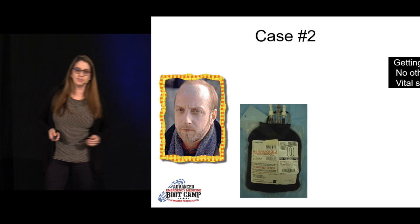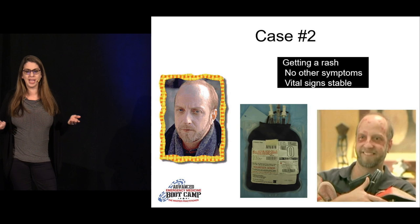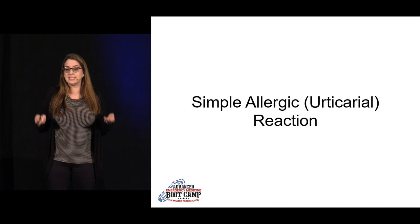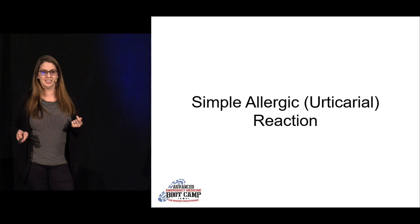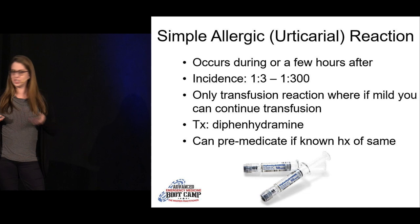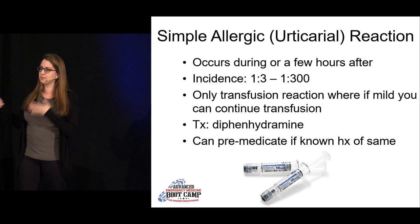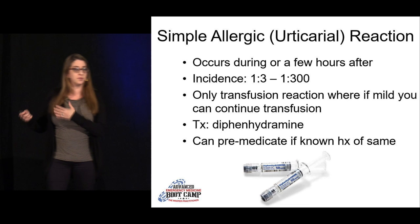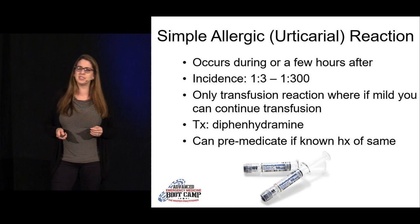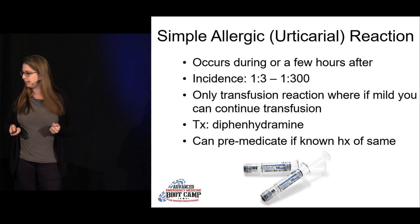Case 2: A patient receiving blood products develops a rash, but has no other symptoms and stable vital signs. This is a simple allergic reaction — isolated urticaria. Incidence is about 1 to 3%. It is reasonable to treat and continue the transfusion while watching the patient carefully to make sure it doesn't progress to something more severe. Premedication even in patients with prior reactions is not well-supported by evidence.